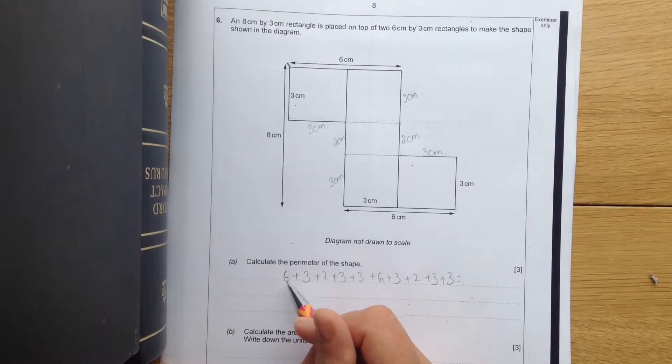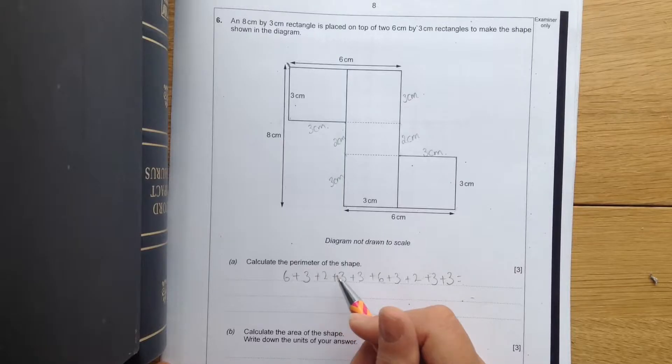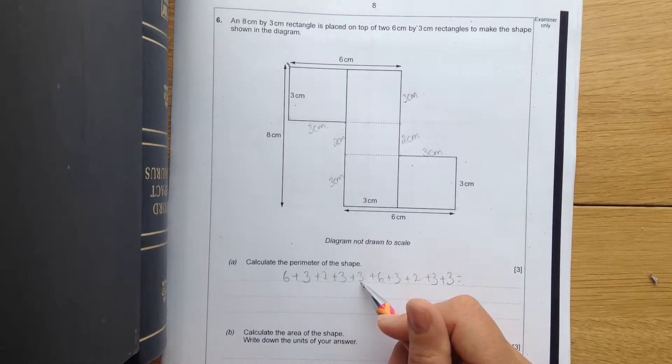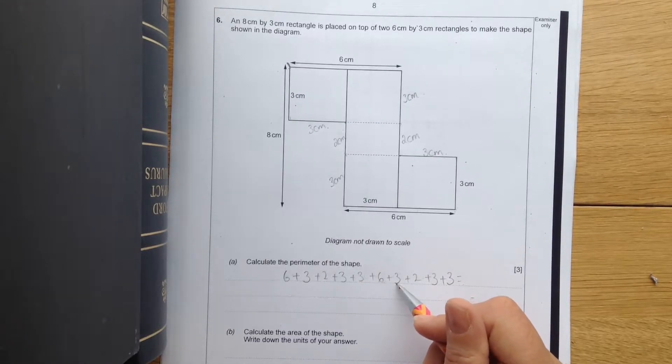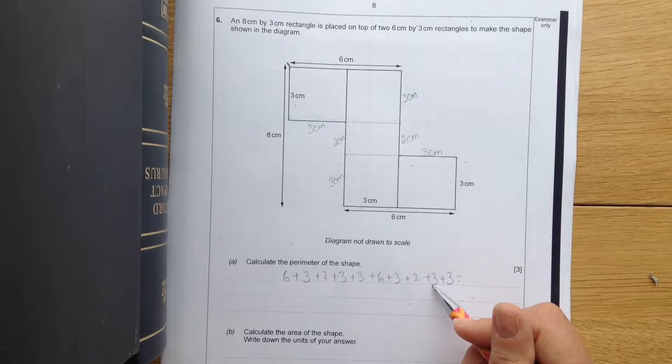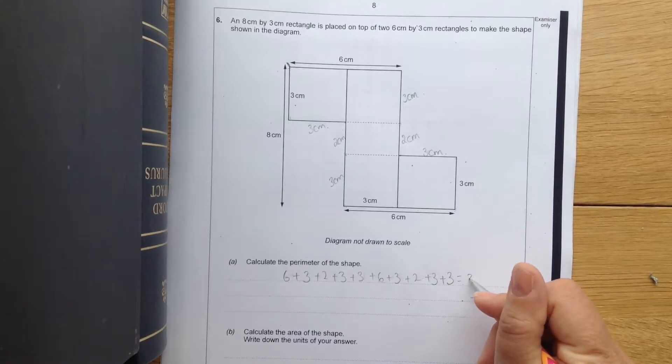Adding up then. 6, add 3 is 9. Add 2 is 11. Add 3 is 14. Add 3 is 17. Add 6 is 23. Add 3 is 26. Add 2 is 28. Add 3 is 31. Add another 3 is 34.